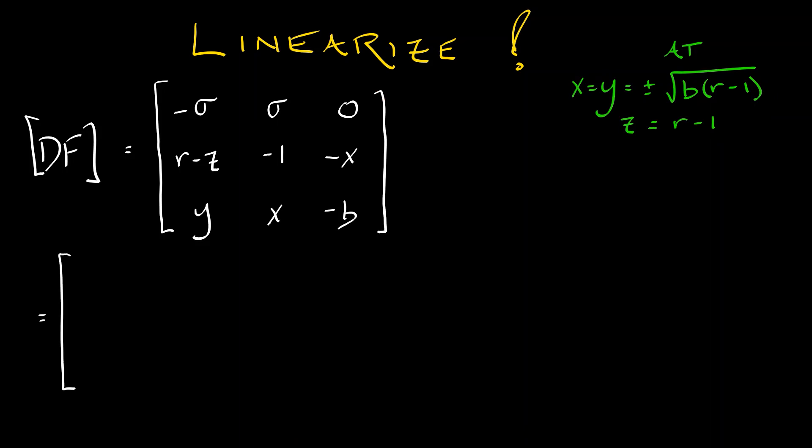Our derivative is as follows. The first column is minus sigma, 1, plus or minus square root of b times quantity r minus 1. The second column is sigma, minus 1, plus or minus square root of b times quantity r minus 1. The third column is 0, minus or plus square root of b times quantity r minus 1. And lastly, minus b.